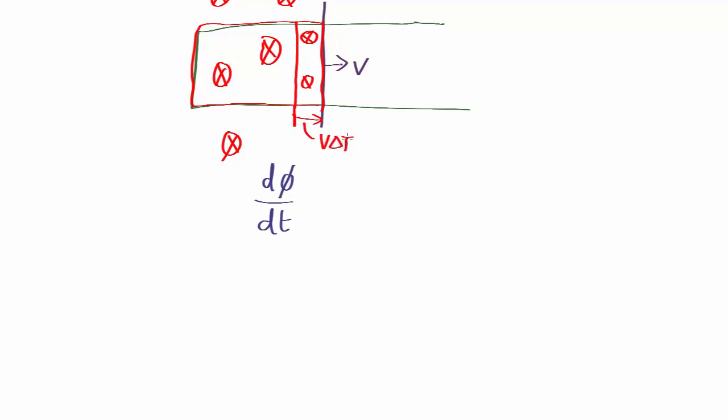That's how far it moves in time delta t. So the extra flux is going to be the area v delta t times the length. The area's length times width. Let's call that l times the magnetic field. So that's the change in flux. Divide that by the change in time gives you d flux by d time, which is just vLB.